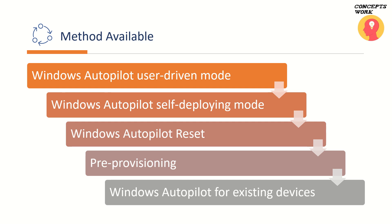Pre-provisioning is the new term for the White Glove feature, which will be discussed in detail in a separate video. Finally, Windows Autopilot for Existing Devices targets Windows 7 or Windows 8 devices that need to be updated to Windows 10 first, after which the Autopilot feature can be used — since Autopilot is a Windows 10 feature.